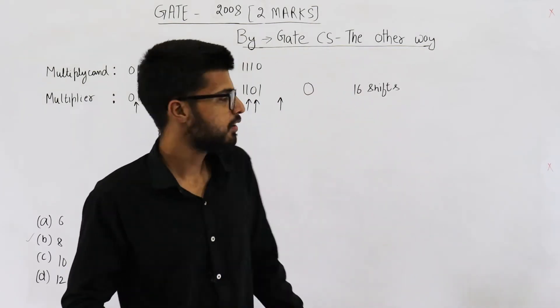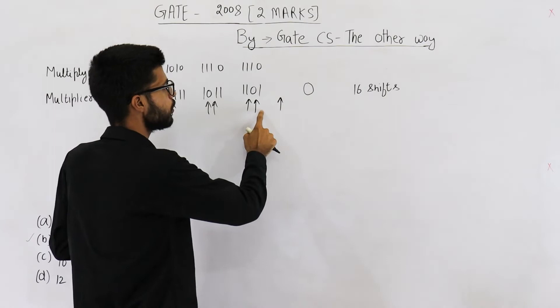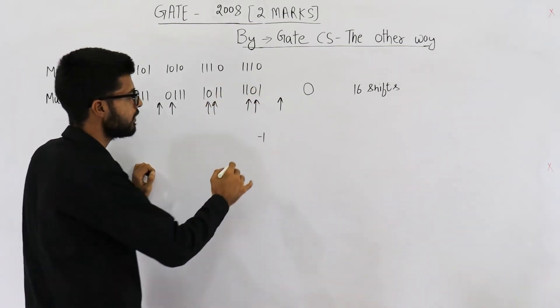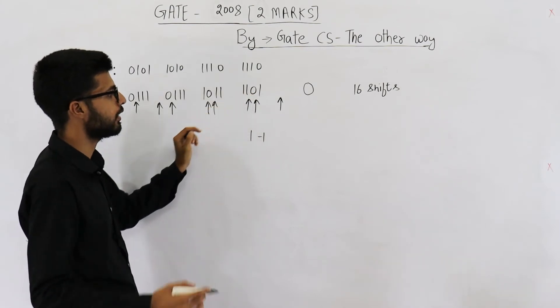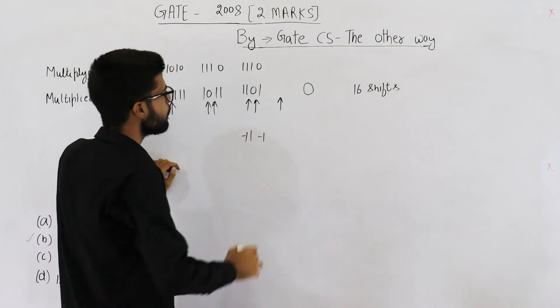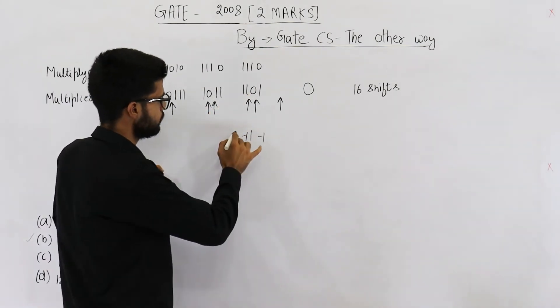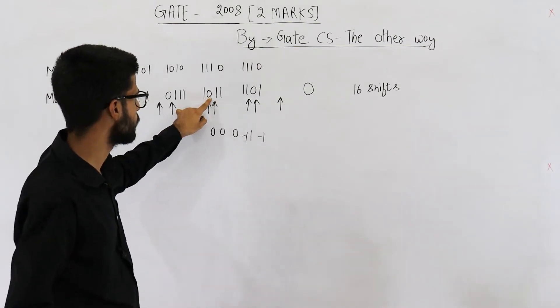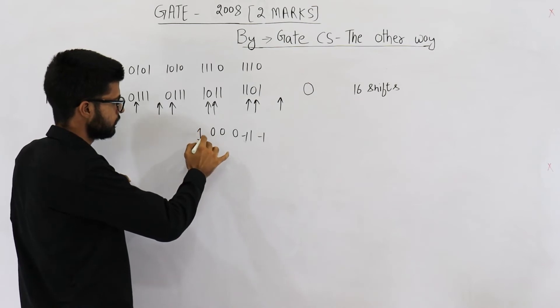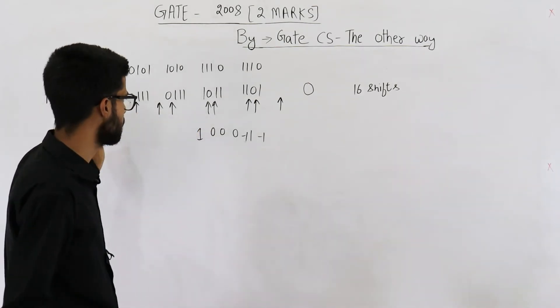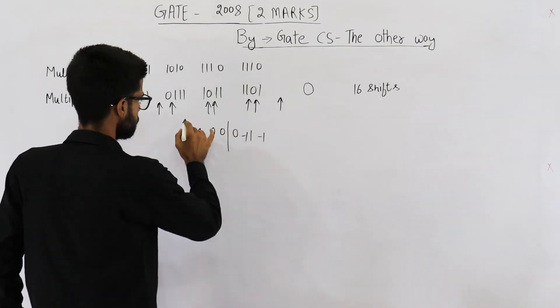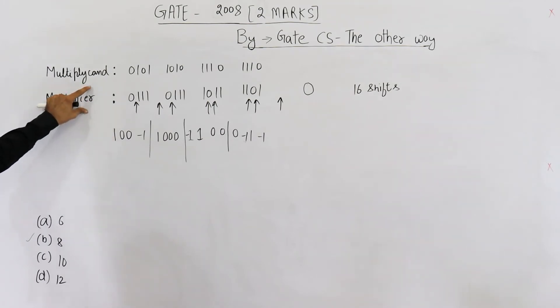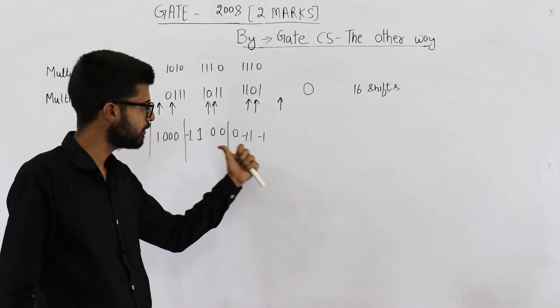Now let's find Booth's coding for this multiplier. See whenever there is a change from 0 to 1, the coding will be minus 1. A block of 1s has started. The change is from 1 to 0, coding will be 1. The change is from 0 to 1 again, that means minus 1. Then 1 to 1, no change, just write a 0. 1 to 1, no change again 0, then again 0. Then 1 to 0, it will be plus 1. So I'm just completing this. So this will be Booth's coding for this multiplier.